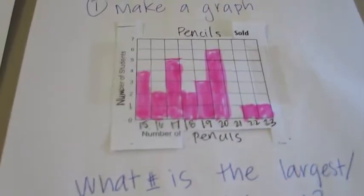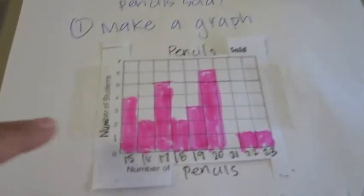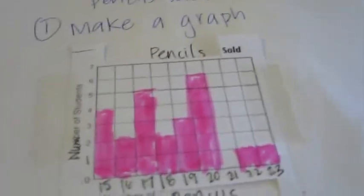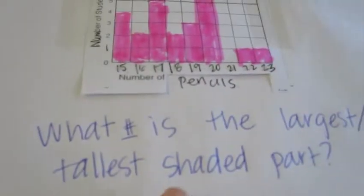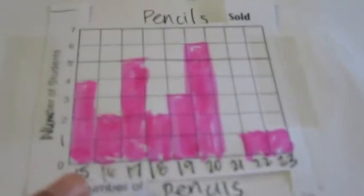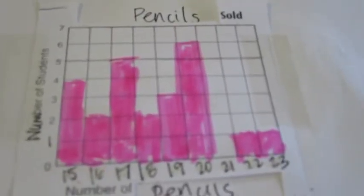As you can see, I finished the graph. Now that you have the graph, it's a visual picture of what's going on. To figure out the mode — the most frequent number — find the tallest shaded part. Which one's the tallest? 20. So the mode is 20. Nice job.